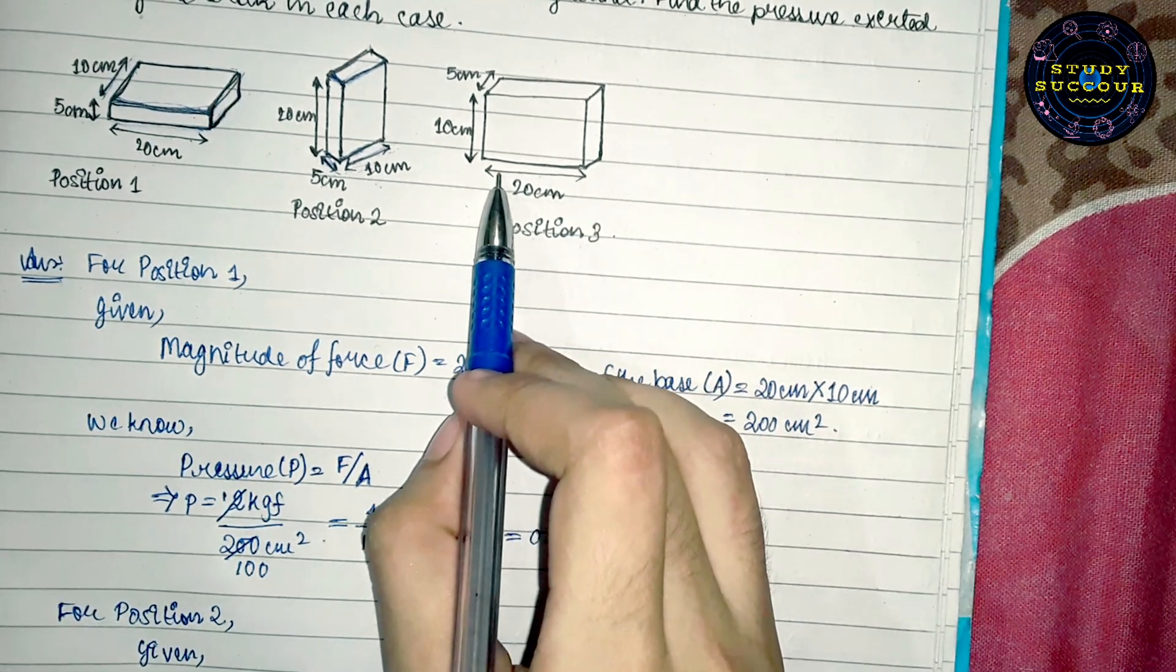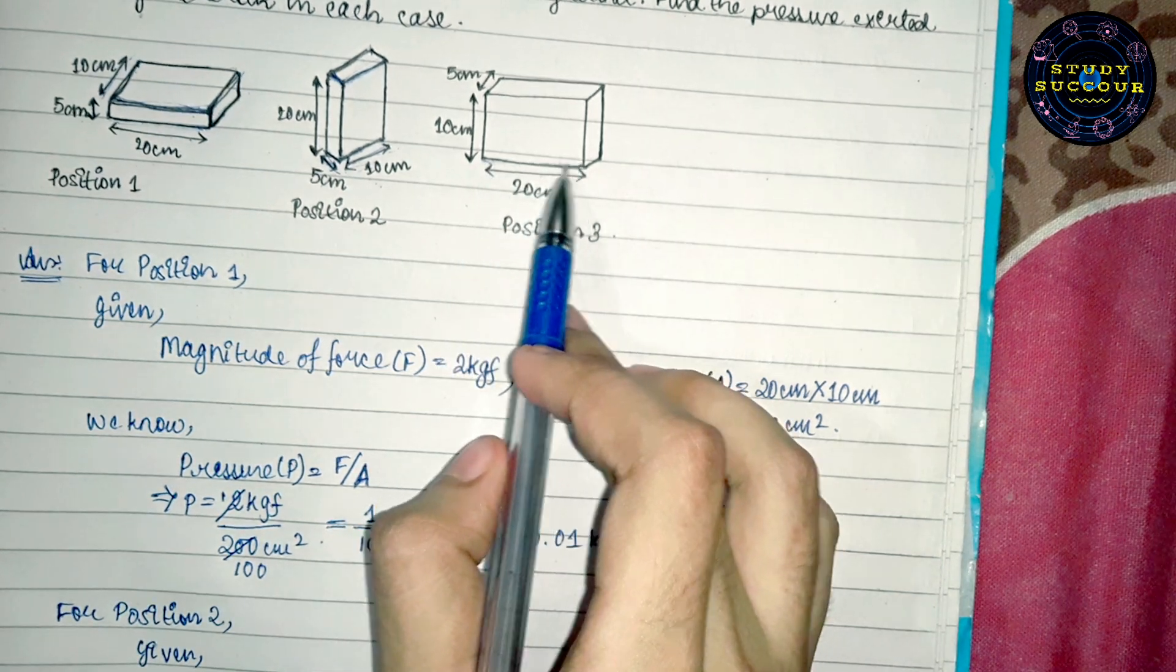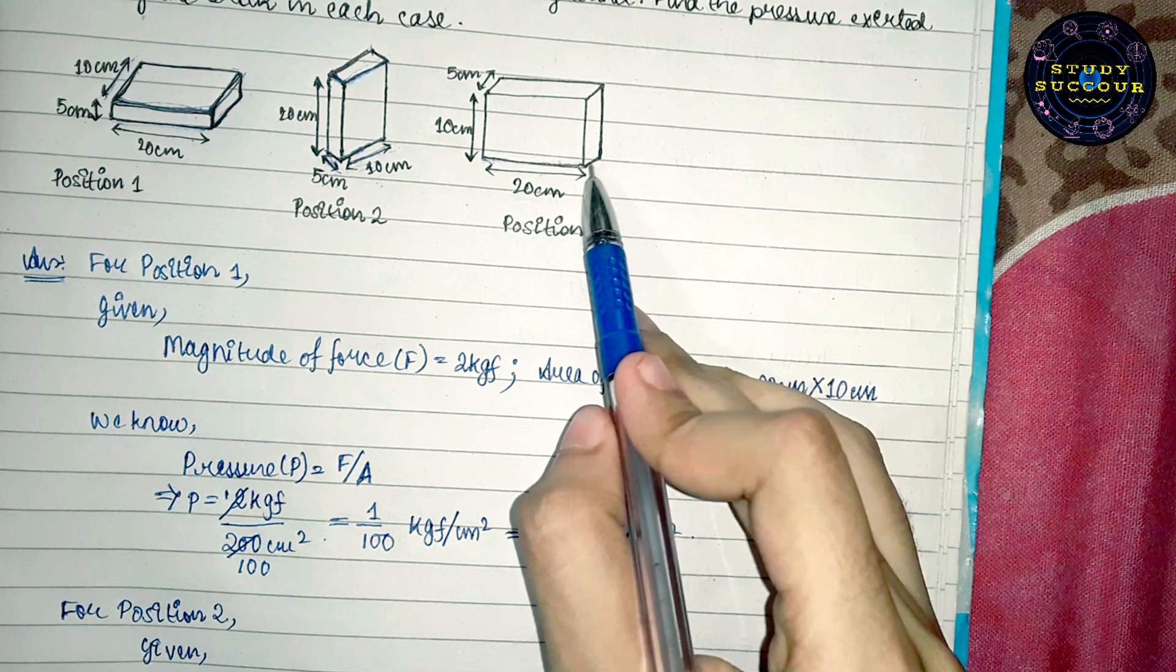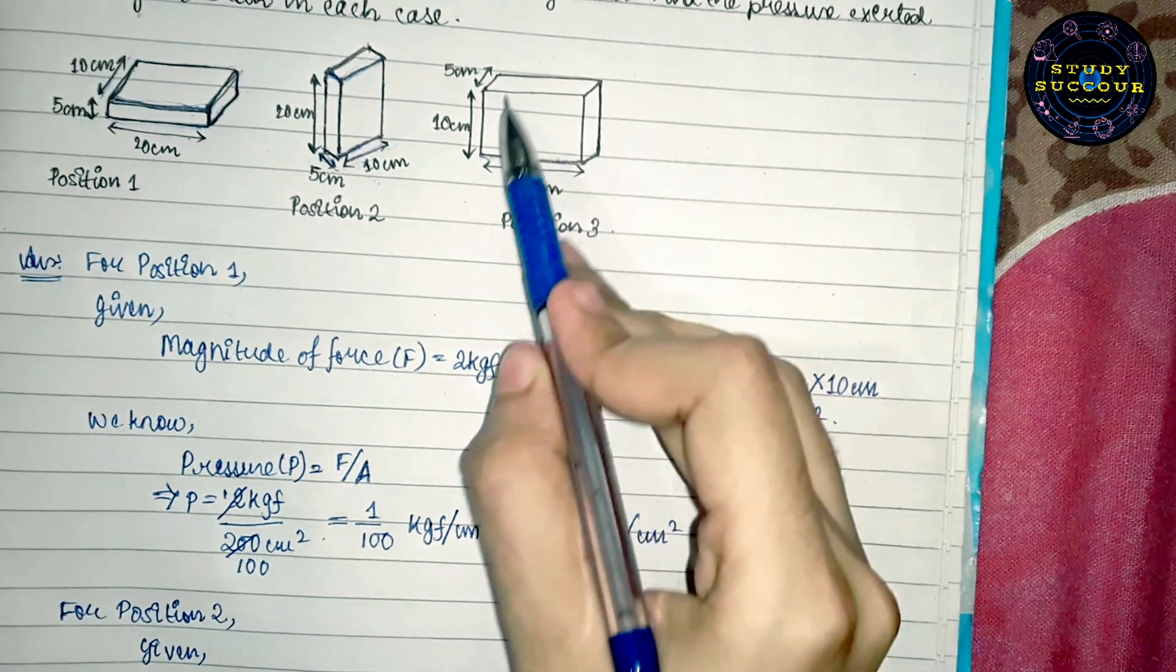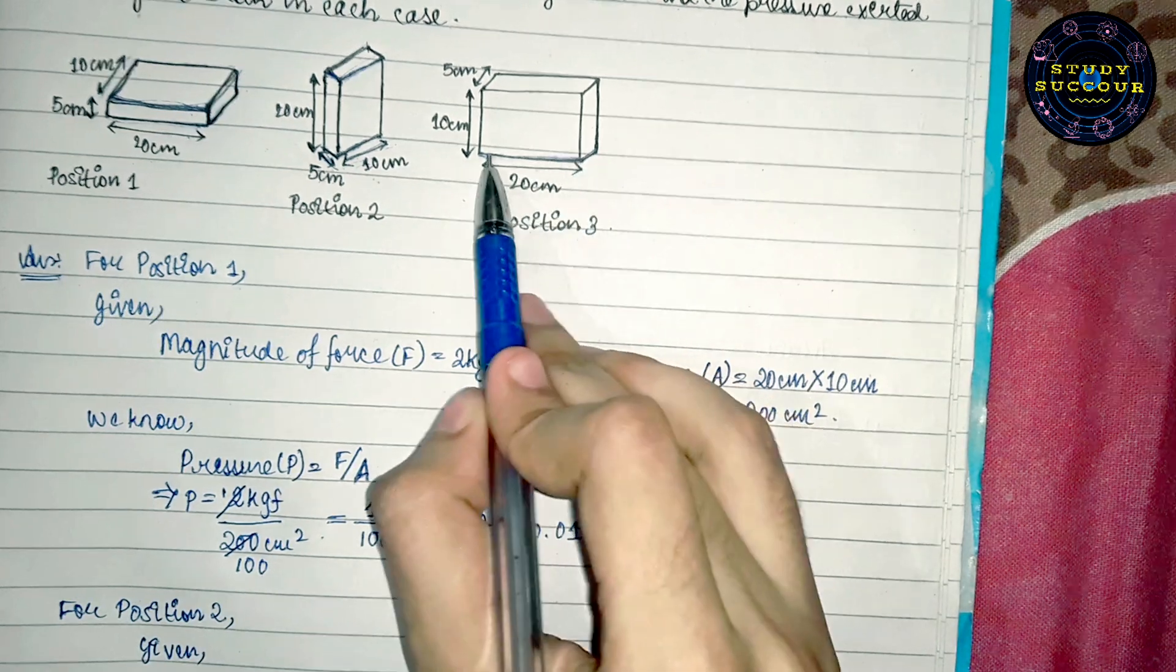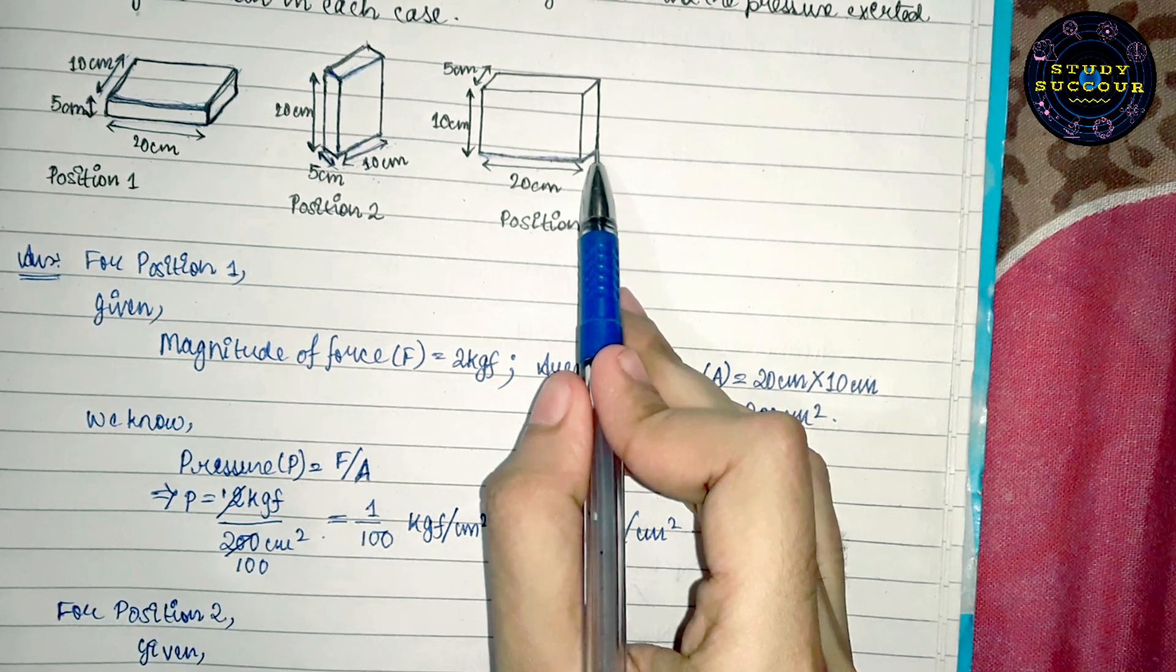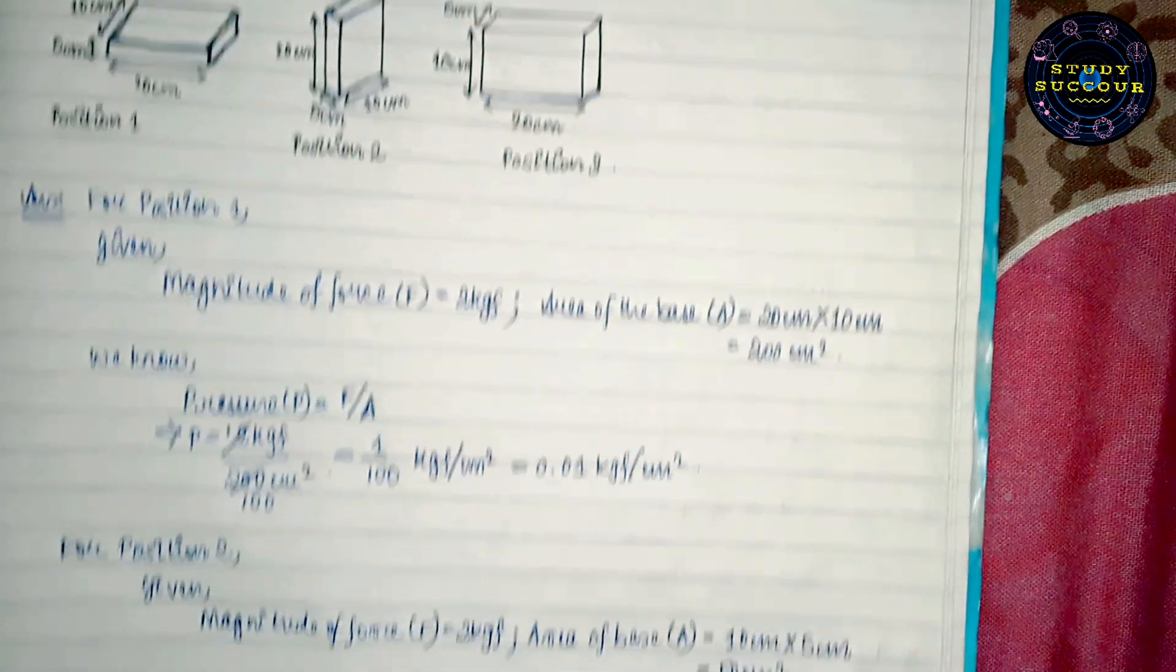In position 3, we can see that the length of the base is 20 cm and the breadth of the base is 5 cm. This is 5 cm, this is 20 cm. So, the area of the base here will be 20 cm length into 5 cm breadth. Our next case will be for position 3.